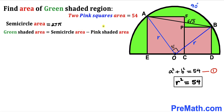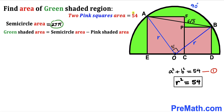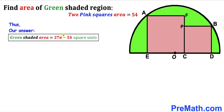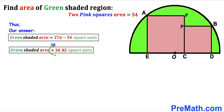Finally, the green shaded area equals the semicircle area minus the pink shaded area: 27π − 54. So the green shaded area is 27π − 54 square units, which is approximately equal to 30.82 square units.